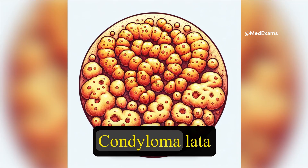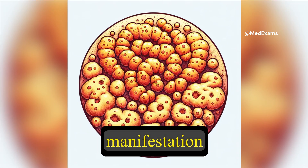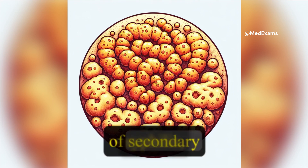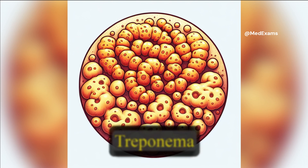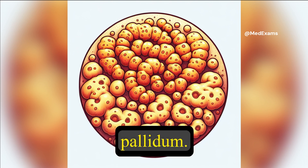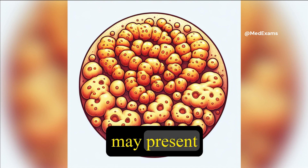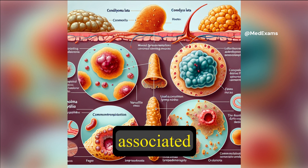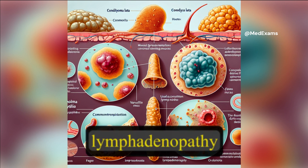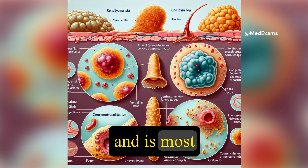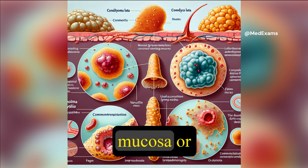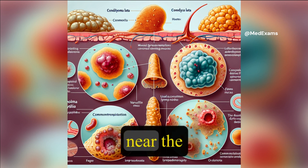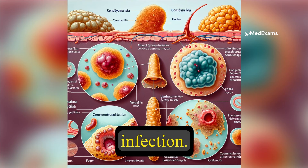Choice F: Condyloma lata is a manifestation of secondary syphilis, caused by Treponema pallidum. Although it may present as verruciform lesions, it is often associated with fever and lymphadenopathy and is most common on the oral mucosa or genital area near the site of primary infection.